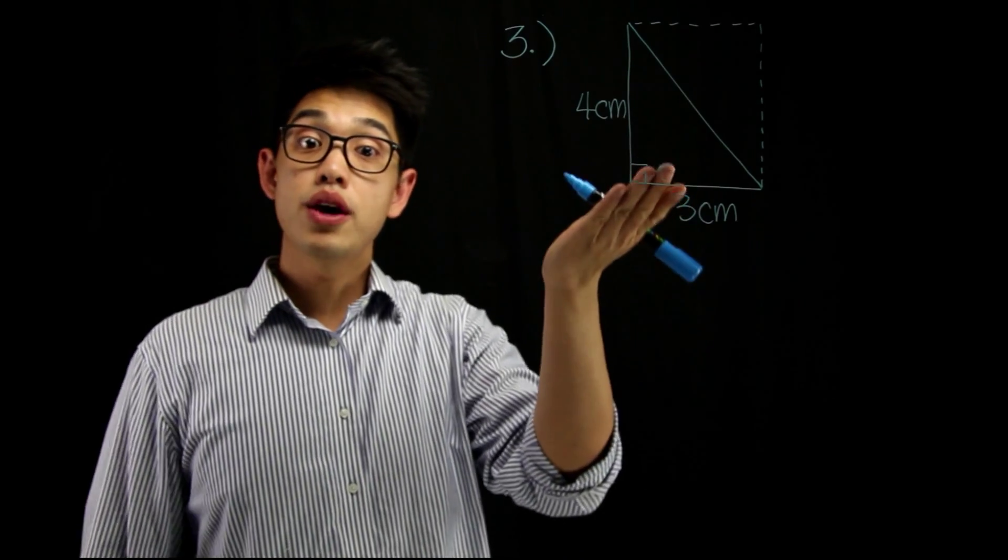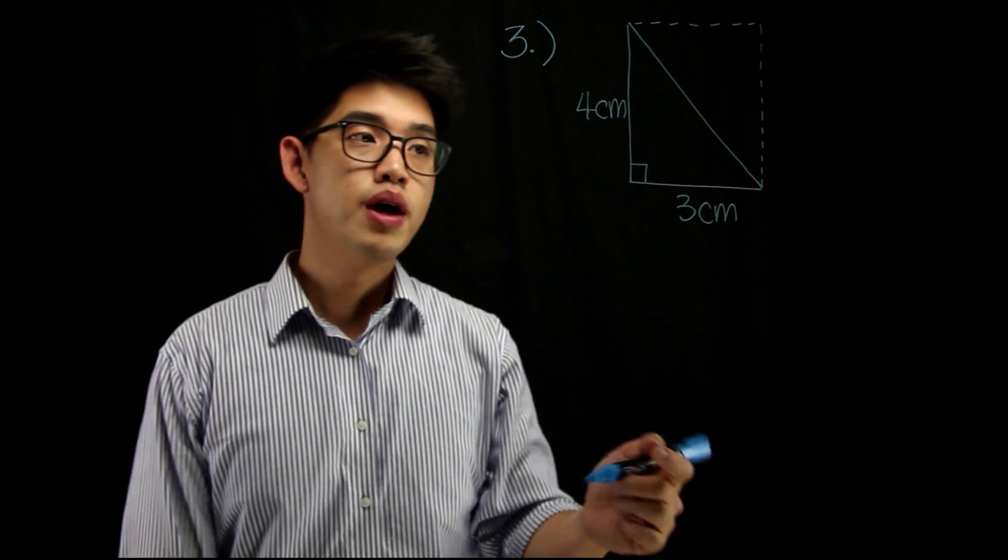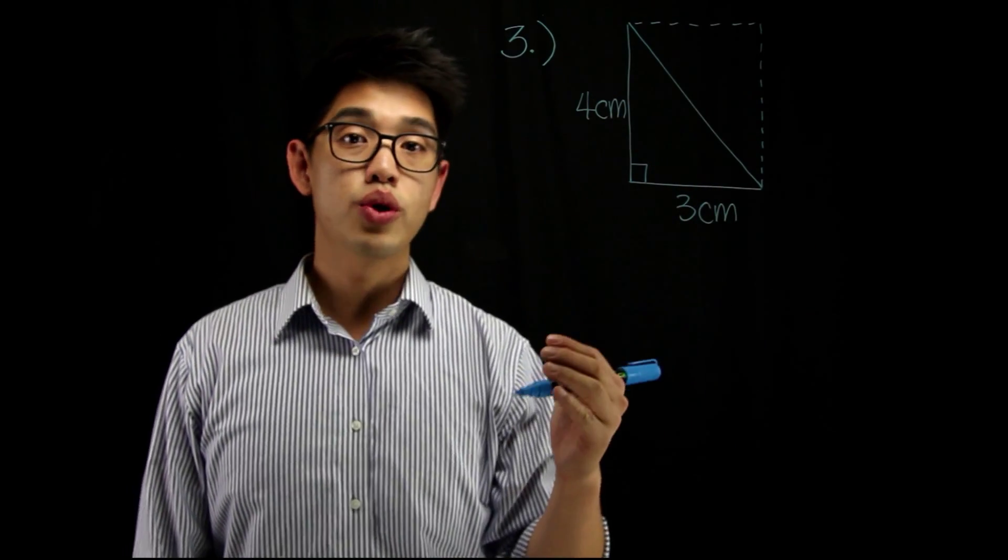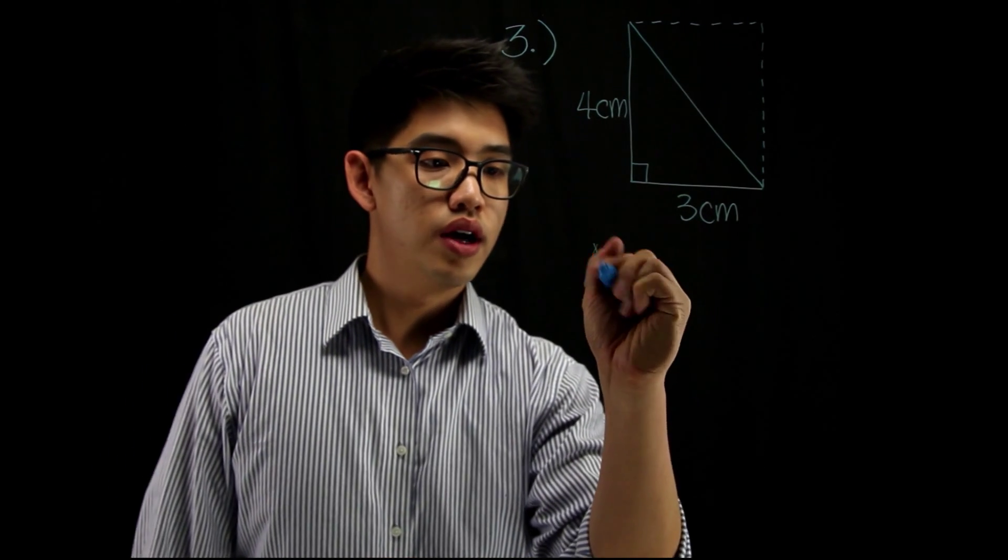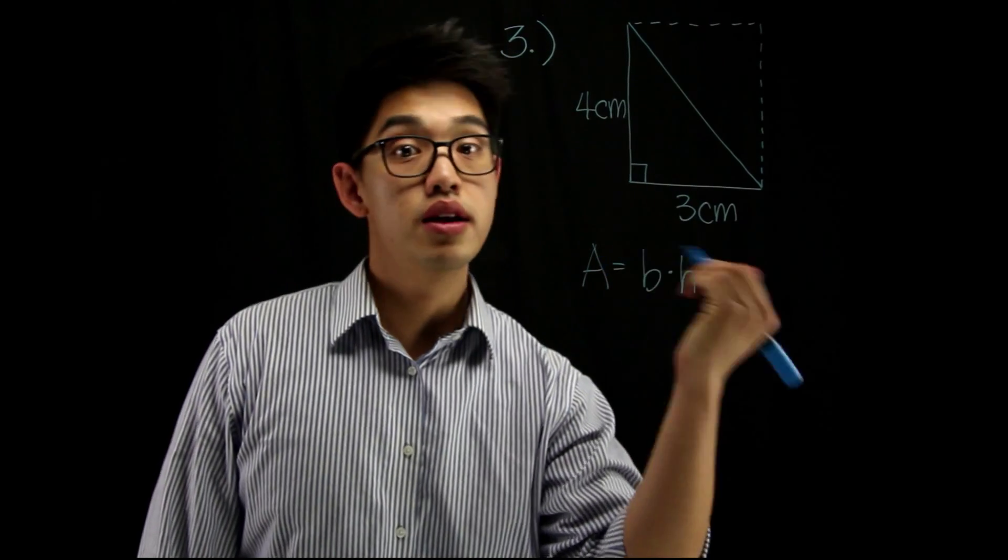And we can say to find the area of the rectangle, that's just base times height. 3 times 4. That's 12. But since it's a triangle and it's only half of a rectangle, we're going to multiply 3 times 4 and then divide it by 2. So, area is base times height and then divide it by 2.